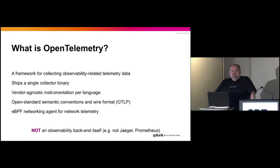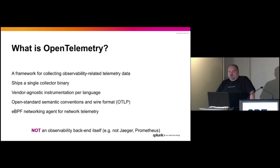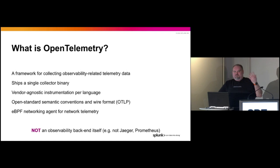OpenTelemetry also ships vendor-agnostic instrumentation per language. Most of the languages you have heard of are probably instrumented, including some that are pretty trendy or new. It's a completely open project — we accept PRs, you can submit support for anything. Rust support is in there, in ultra-bleeding-edge alpha, much like Rust itself. We also have open-standard semantic conventions — basically a way that you name your data when you send it in, so that across different tools and platforms you can know this metric indicates, for example, network bandwidth.